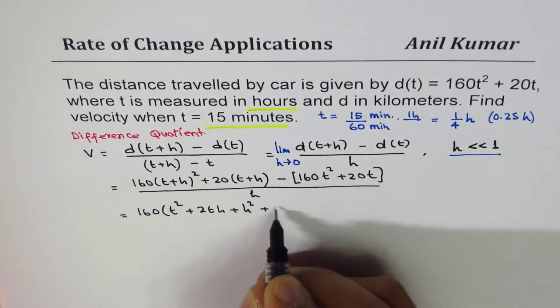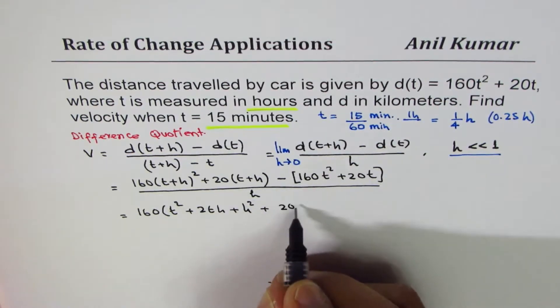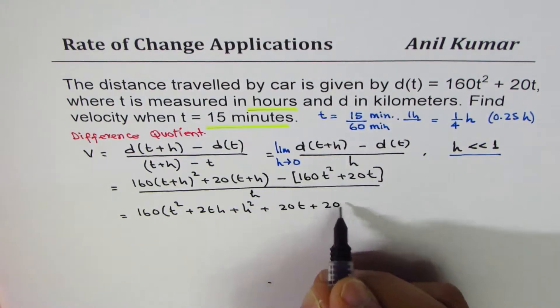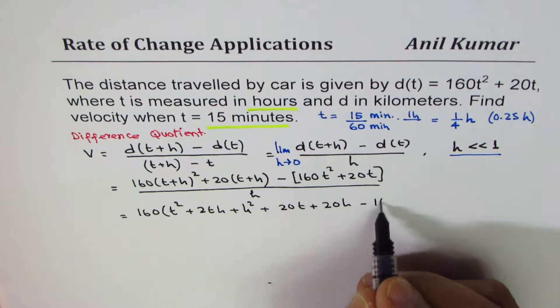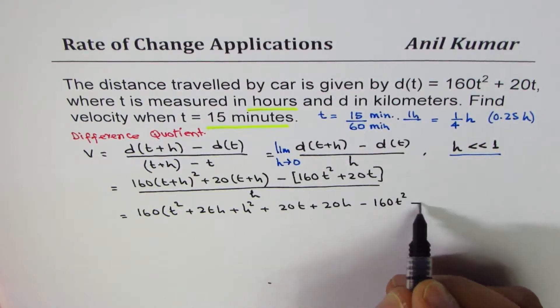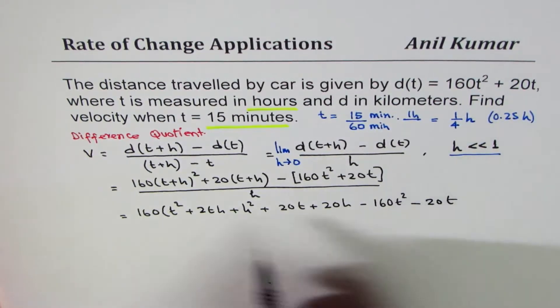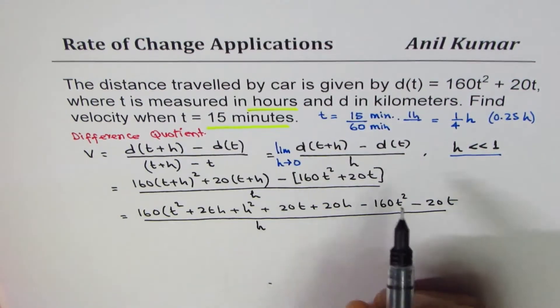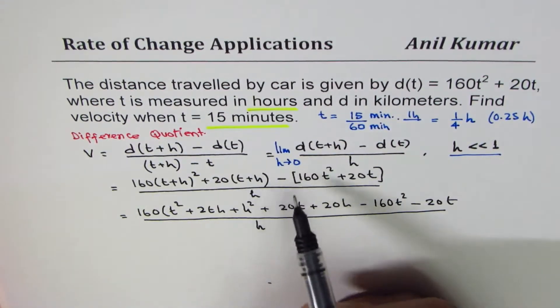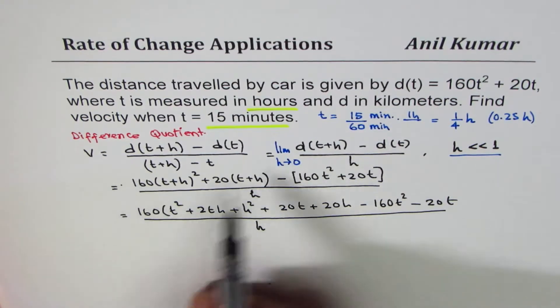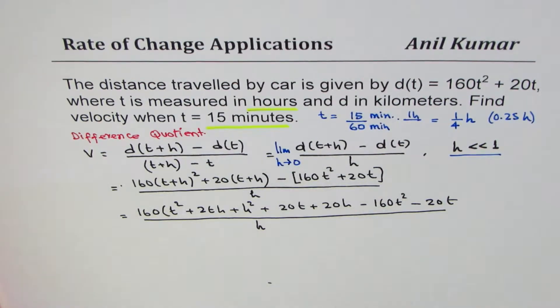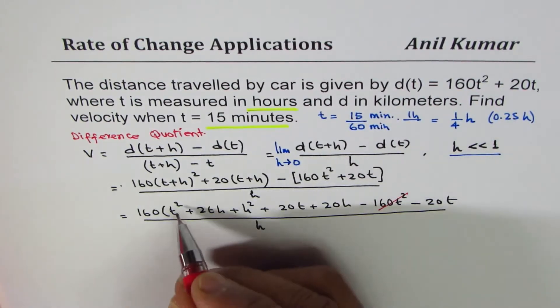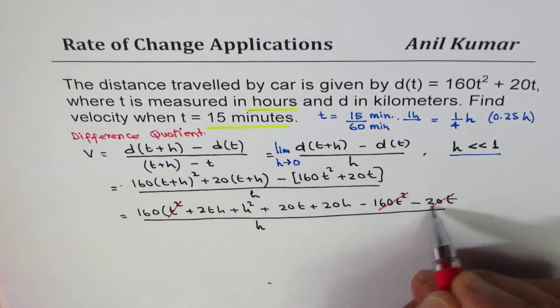t² + 2th + h² plus this gives us 20t + 20h minus 160t² minus 20t divided by h. So if you are doing the same example for calculus you keep on writing this limit h approaching 0. Now from here you can see these two terms will cancel.